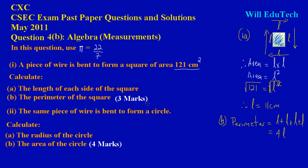Since it's a square with four equal sides, that simplifies to 4 times L. We already found L to be 11, so the perimeter of the square is 4 times 11, which equals 44 centimeters. That's it — it's that easy! Now let's look at part 2.